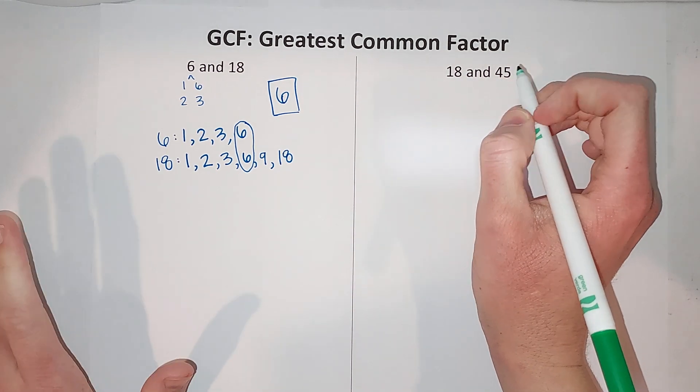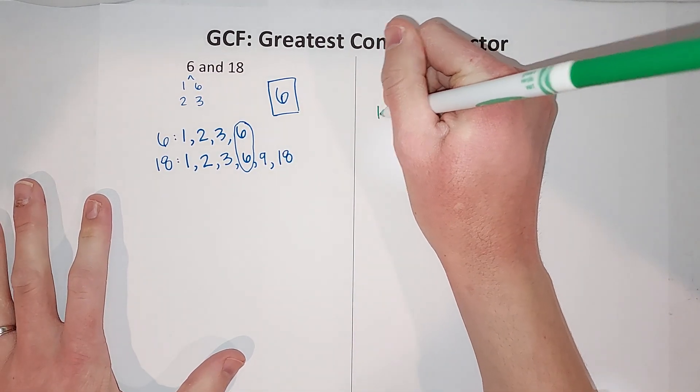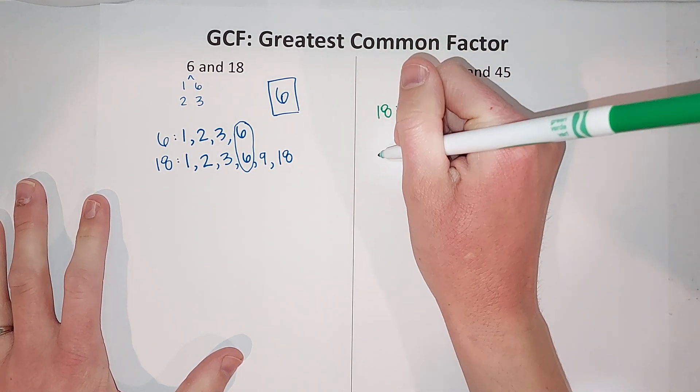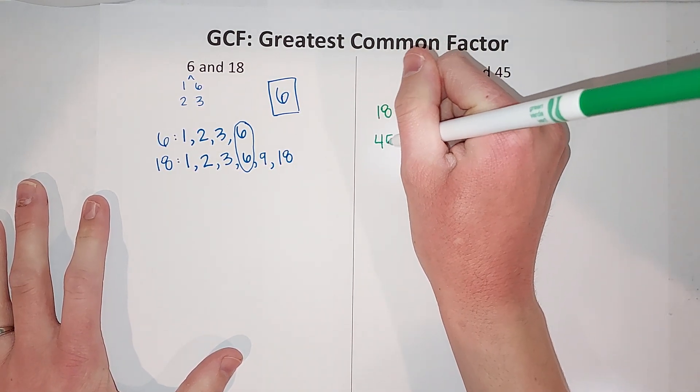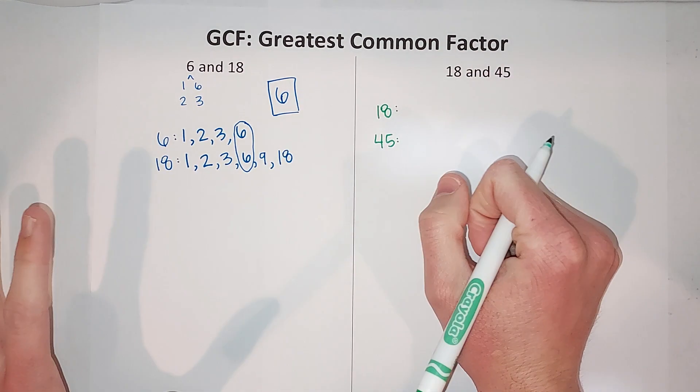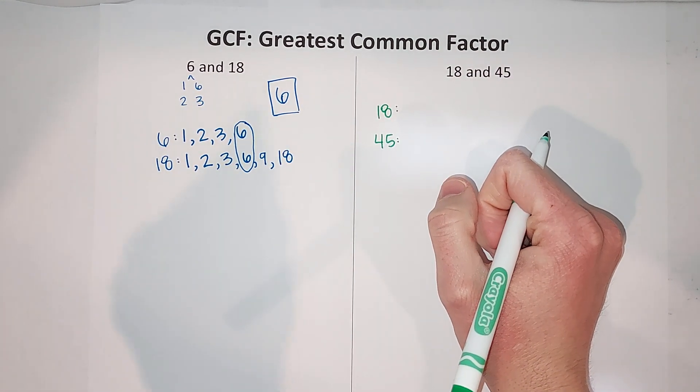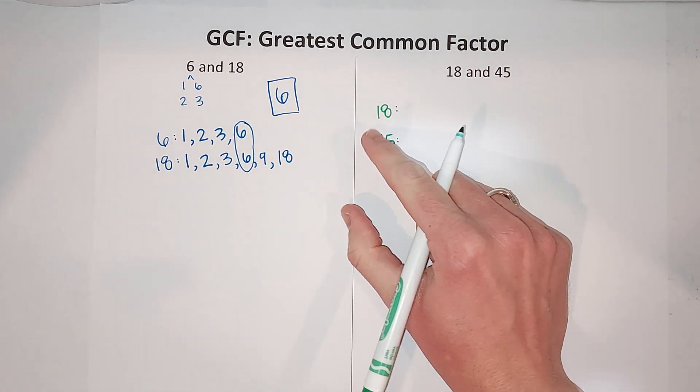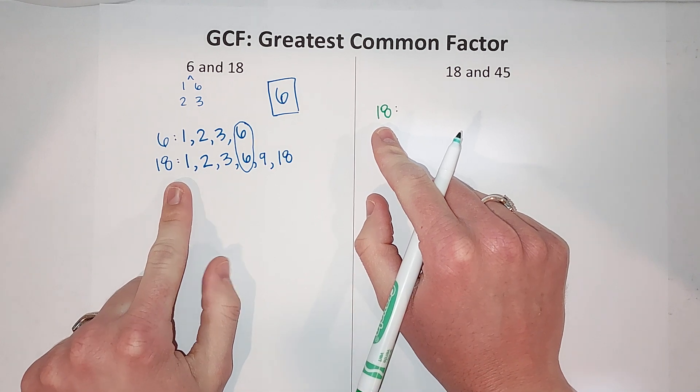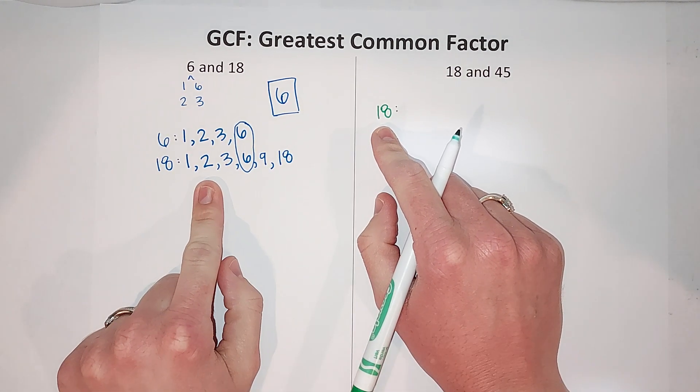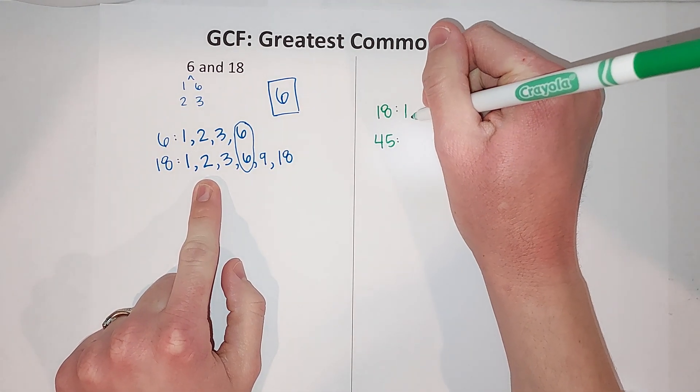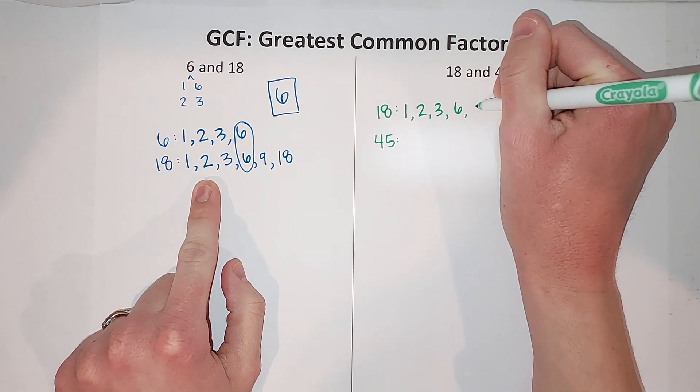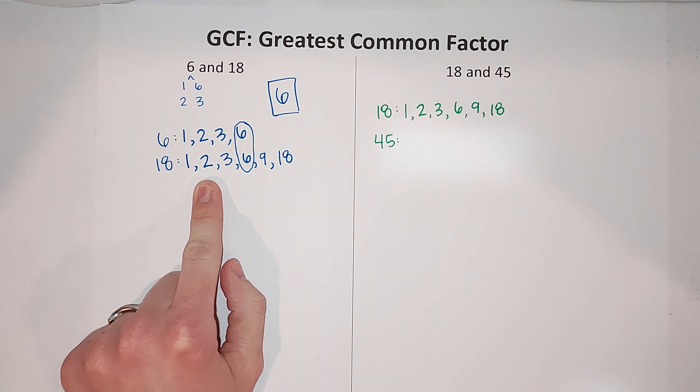Now we're looking for the greatest common factor between 18 and 45. If you're like 'oh those are bigger numbers,' just hold on, you can do it. This was convenient—sometimes on homework you get the same number, so it's like 'oh I already figured out all the factors,' sweet. So I'm just gonna write this again: 1, 2, 3, 6, 9, 18.